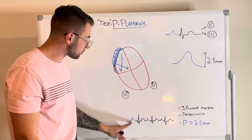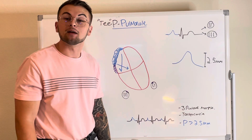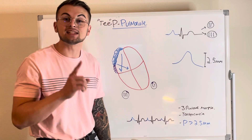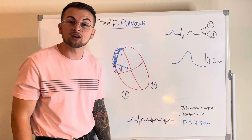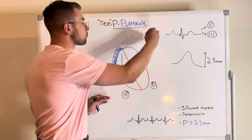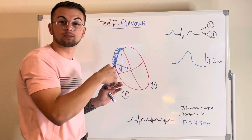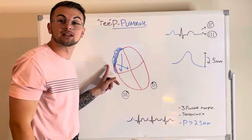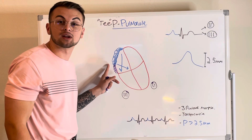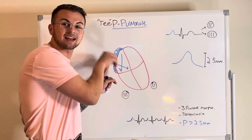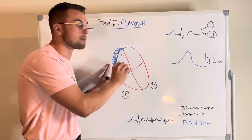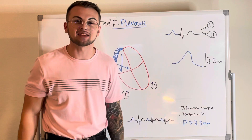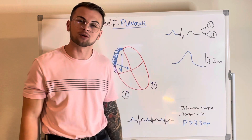...indicates multifocal atrial tachycardia with criteria for P Pulmonale. Multifocal atrial tachycardia, or MAT, can be seen in patients with severe chronic lung disease like COPD or prolonged pulmonary hypertension, so it is no surprise the right atrium has become enlarged with muscle — more muscle, more electricity — to work against the high pressures it faces from the pulmonary circulation. As always, thank you for taking the time to learn with us today. Remember to like and subscribe for more content.